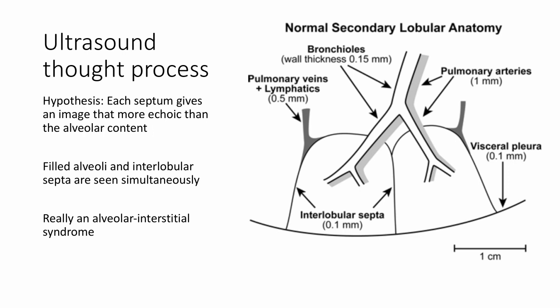To give you a better pictorial representation of this, we see here an interlobular septa as indicated by the two arrows. This space here would be filled with contiguous alveoli. Filling these alveoli with fluid, or consolidating them, would provide a macroscopic image on ultrasound. Lichtenstein describes that the interlobular septa by themselves are more echoic than the contents of the alveoli. But what we see ultrasonographically is a combination of the interlobular septa as well as the fluid-filled alveoli. And really, consolidation on ultrasound is an alveolar interstitial syndrome.